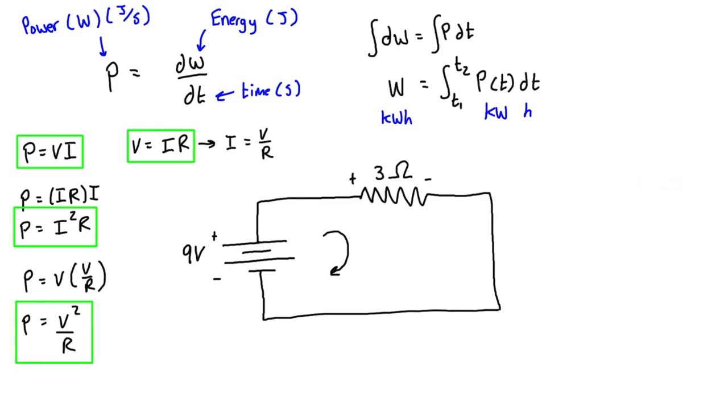First we need to find the current. The current flows clockwise from the positive terminal to the negative using conventional flow notation. Using Ohm's law, I = V/R, so the current is 9 volts divided by 3 ohms, which equals 3 amps.